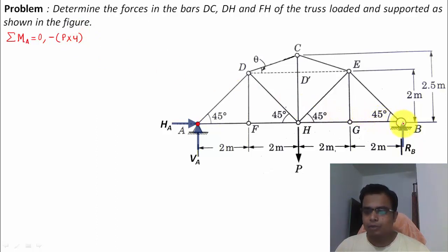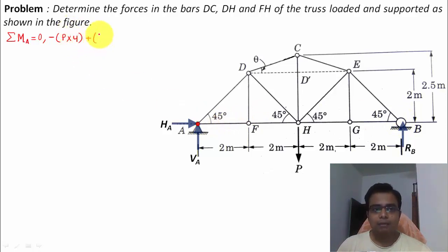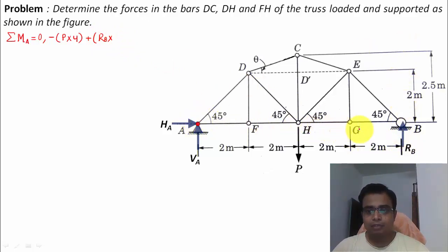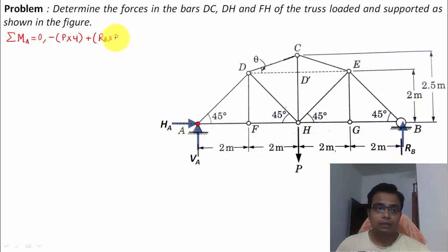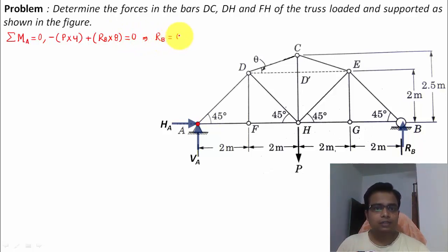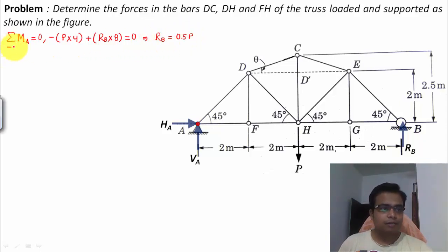RB produces an anti-clockwise moment at point A — positive sign — multiplied by the perpendicular distance AB, which equals 2 + 2 + 2 + 2 = 8. Setting the sum equal to zero and solving this equation, the value of RB works out as 0.5P.